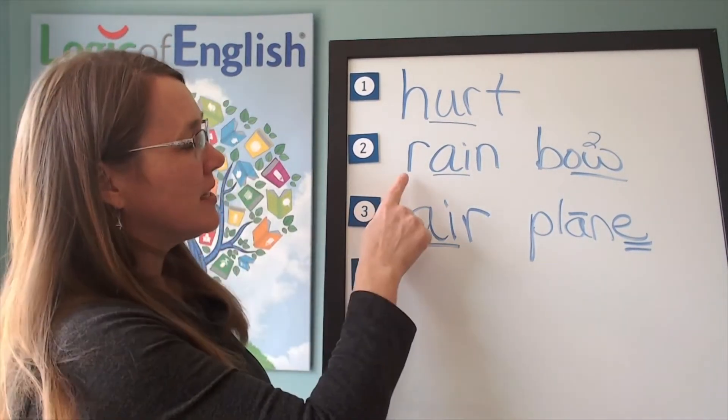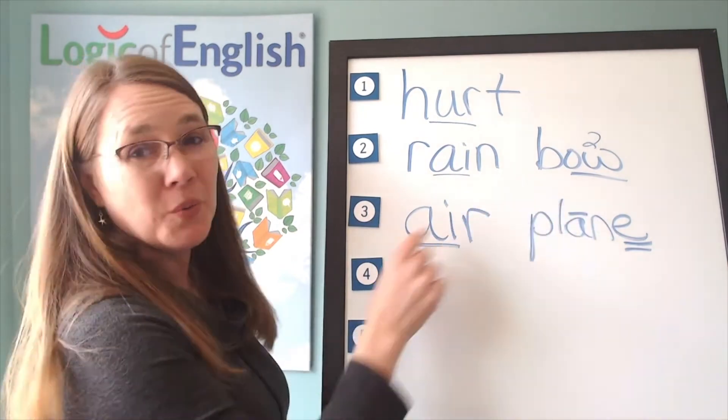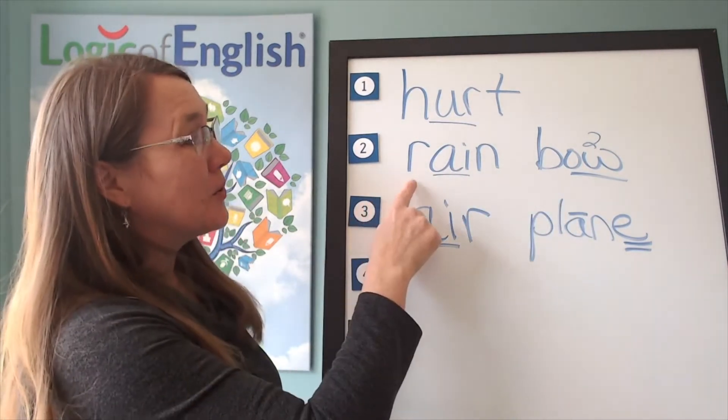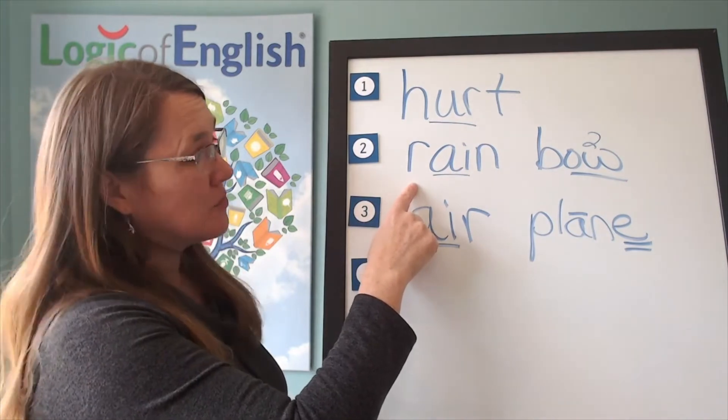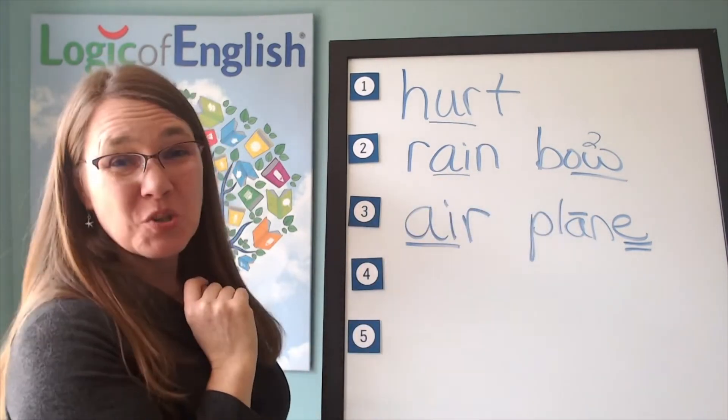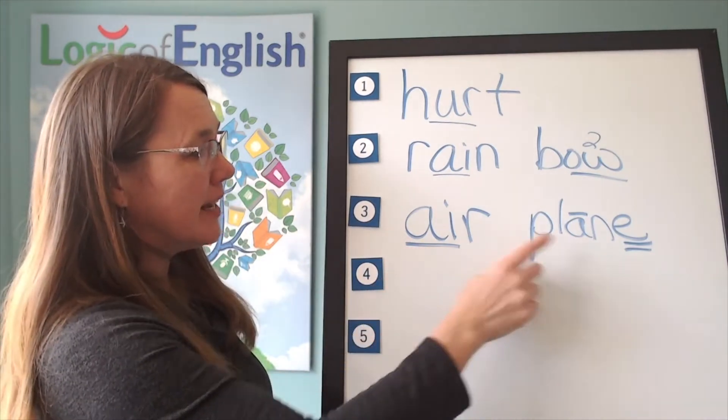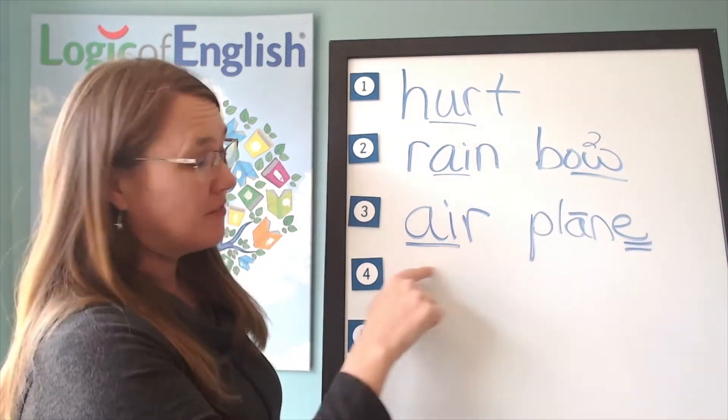Which two words do you see in rain and bow? Oh, I just told you the answer. You're right. This is made out of two words, rain and bow. Do you see two words in the word airplane? You're right. Air and plane. It's a plane that flies in the air.